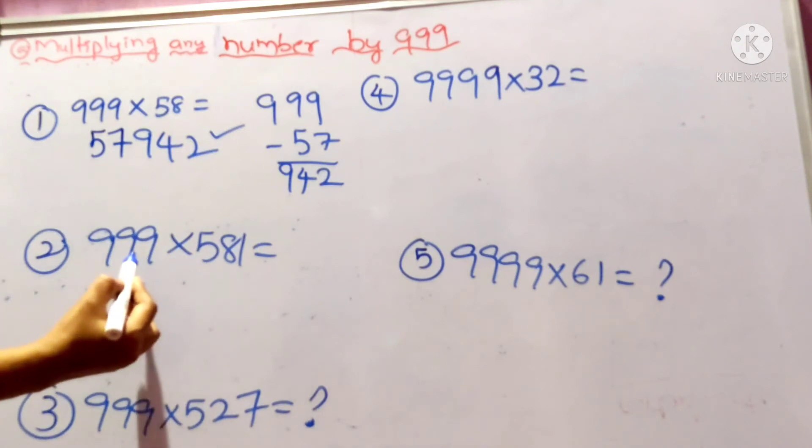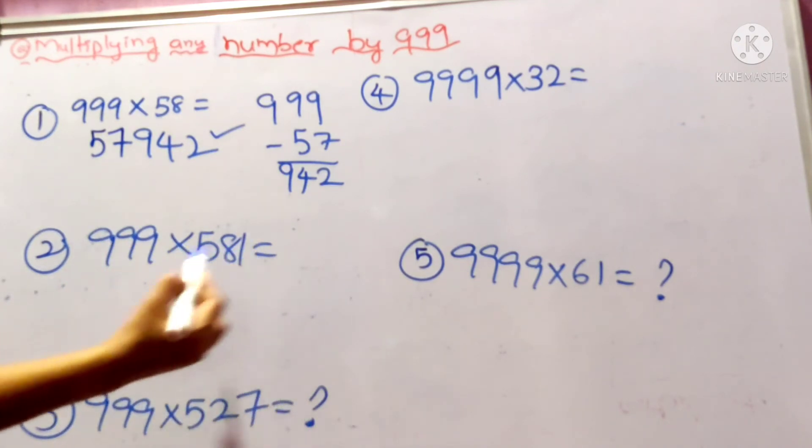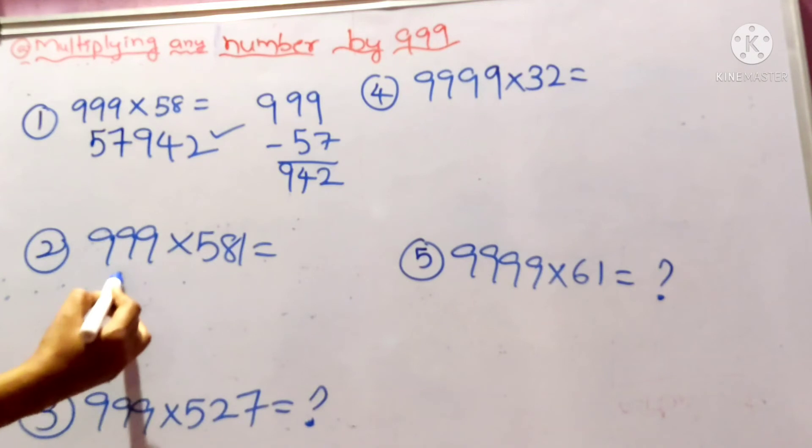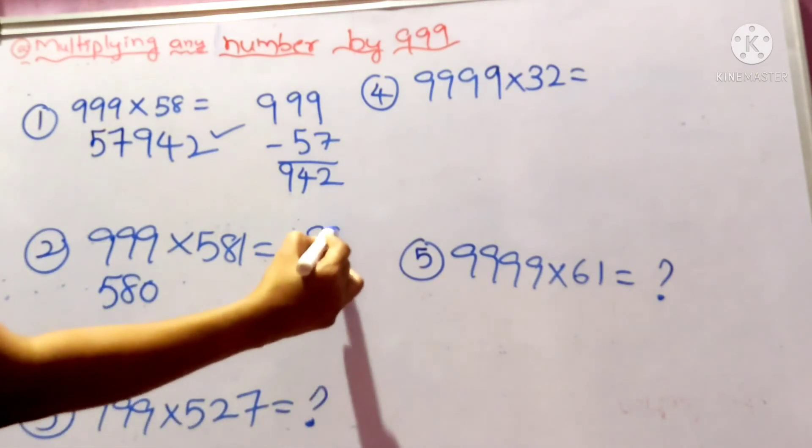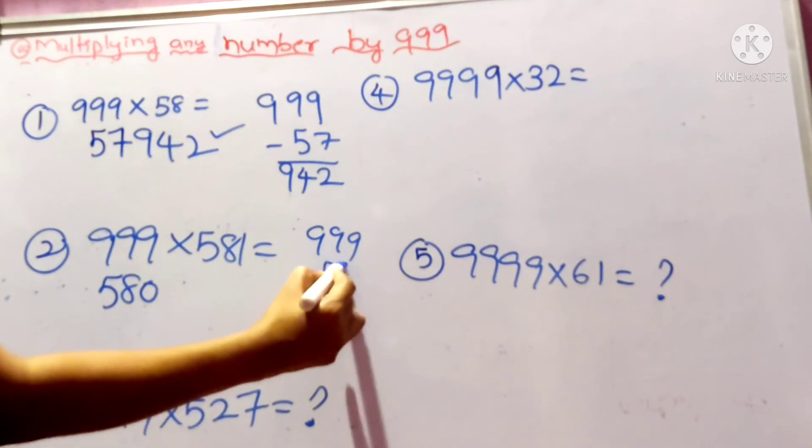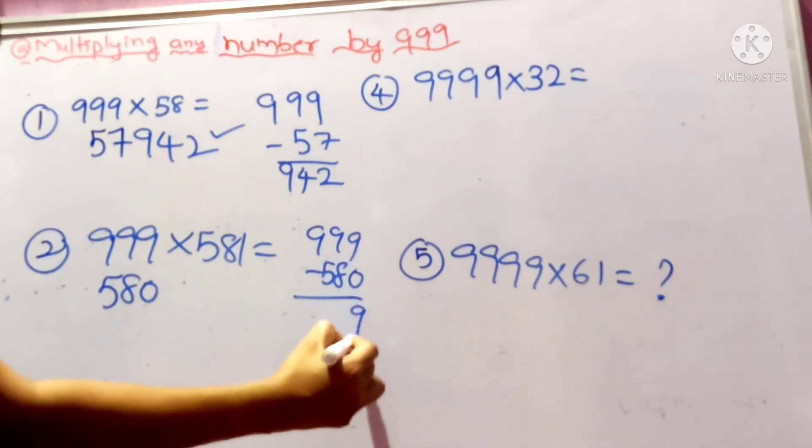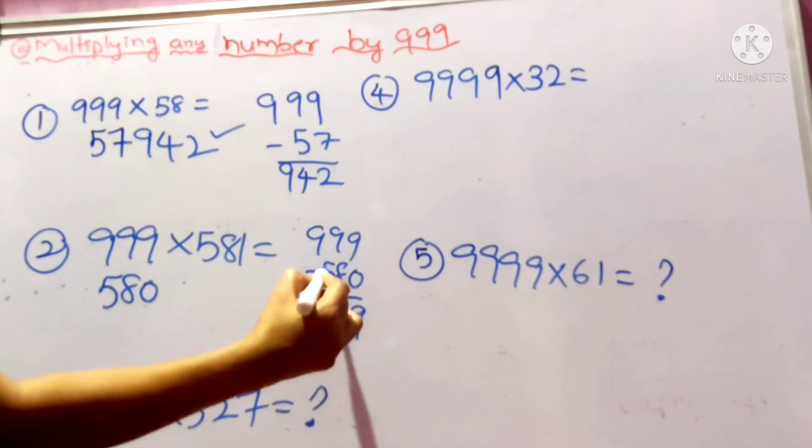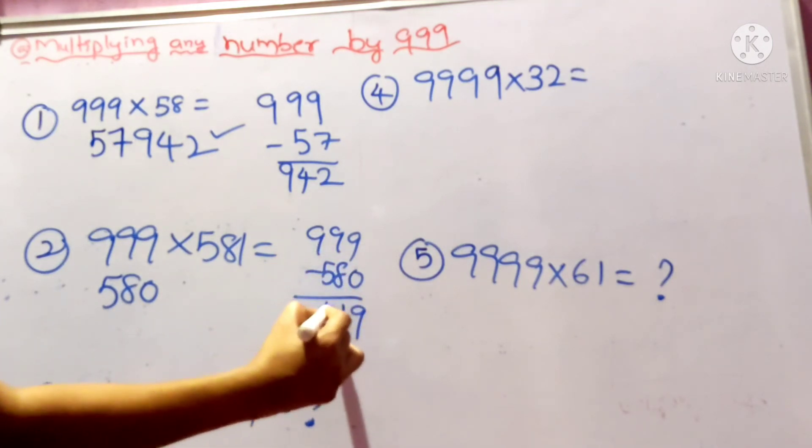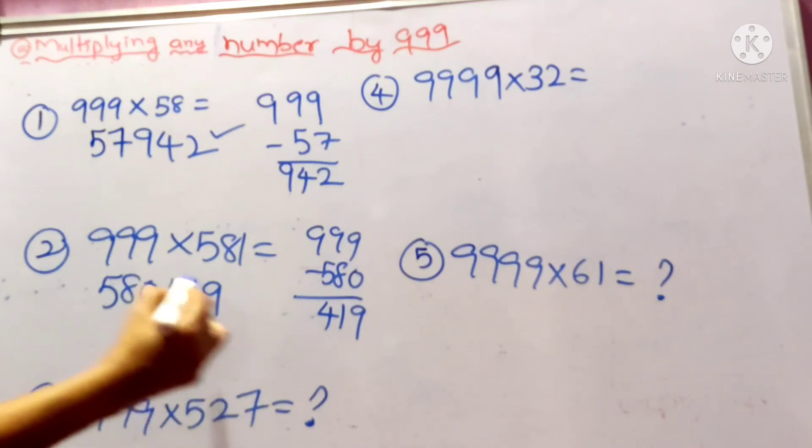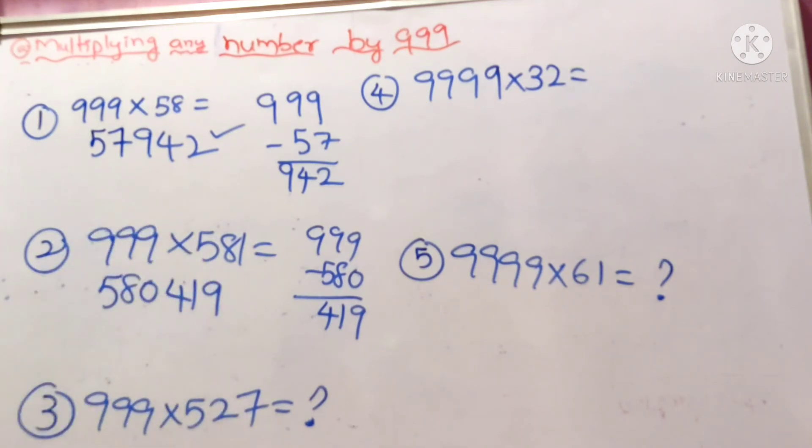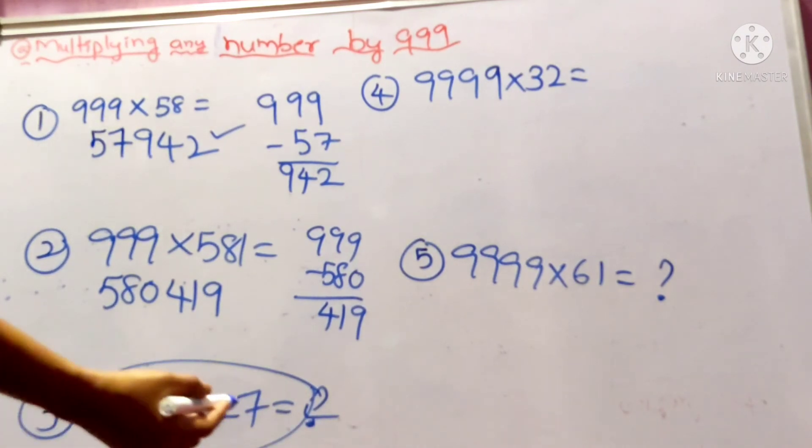Similarly, 999×581. The number which is less than 581 is 580. Now 999 minus 580: 9-0 is 9, 9-8 is 1, 9-5 is 4, which is 419. The answer is 580,419. And this question is left over for you. You have to do it. Take a pen and paper.